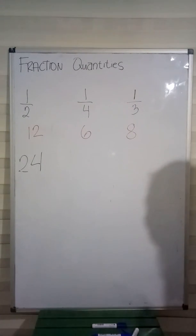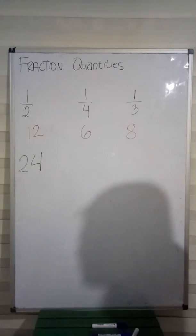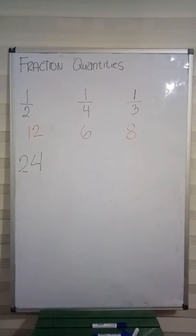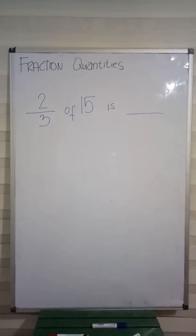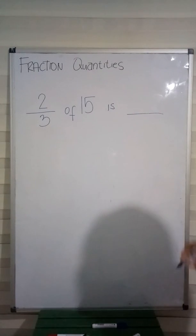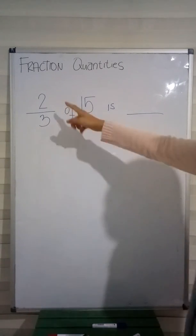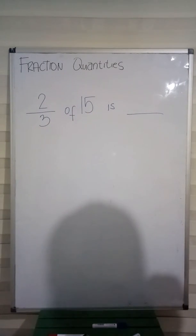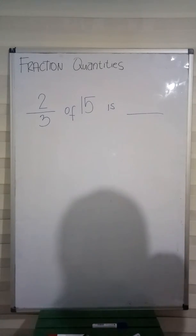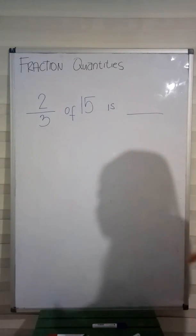How do we get the fraction quantities if the numerator is not 1? I will give you an example. On the board, we have the fraction 2 thirds and we have the number 15. It means we need to get the 2 thirds of 15. Now, our numerator is not 1 anymore. So therefore, we need to add an extra step to get the fraction quantities of 15.